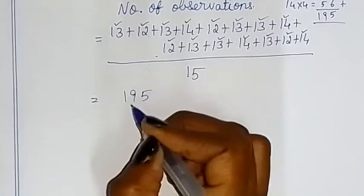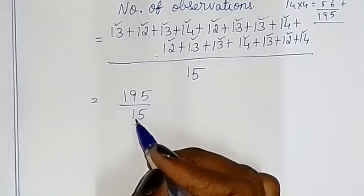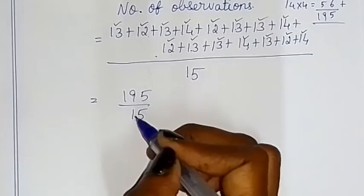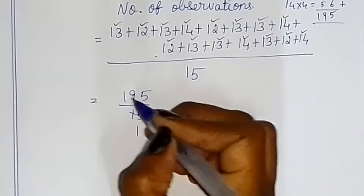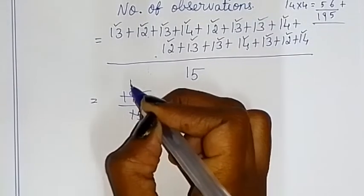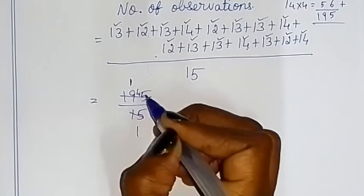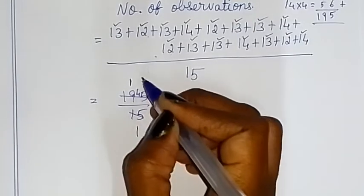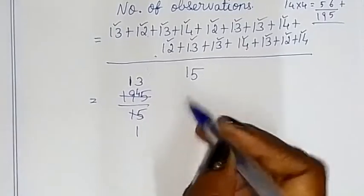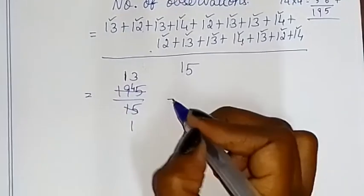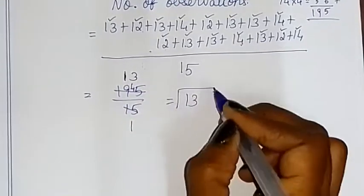So we have 195 divided by 15. Using the 15 times table: 15 ones are 15, 15 twos are 30, 15 threes are 45 — so 195 divided by 15 equals 13. Therefore, the mean age is equal to 13. The required answer is 13.